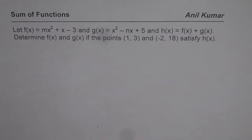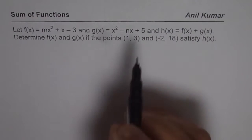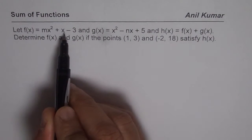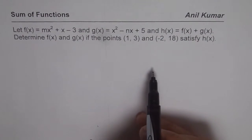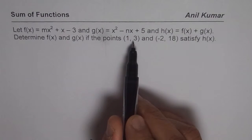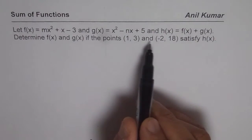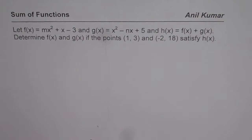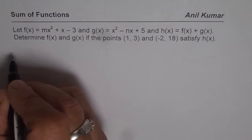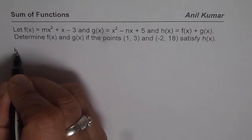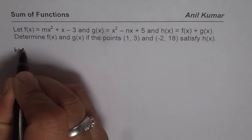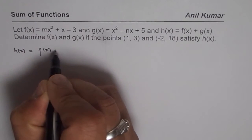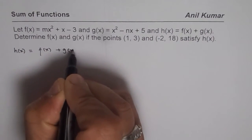What we should do is first find h of x, which is the combination of the two given functions, and then by substituting these two points we can find the two unknowns m and n. So let's write down what h of x is — h of x is the combination of f of x and g of x.